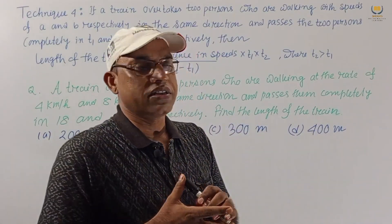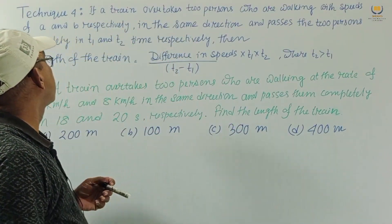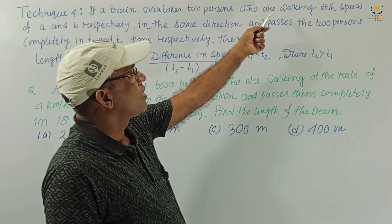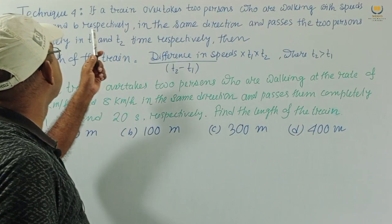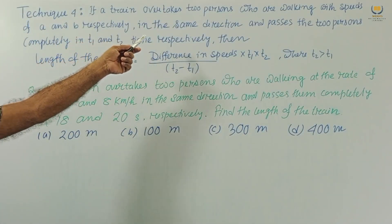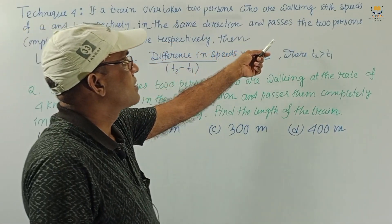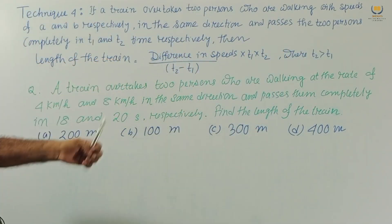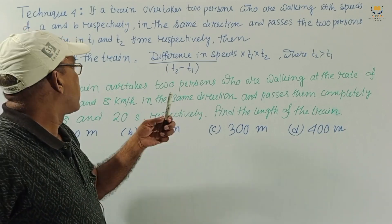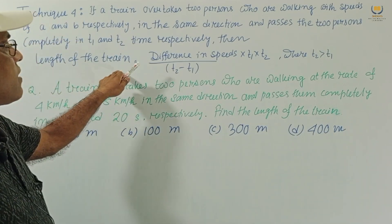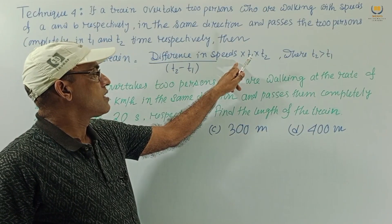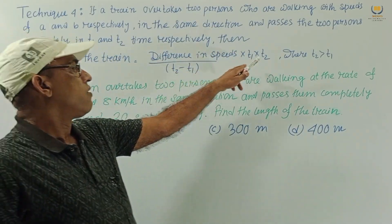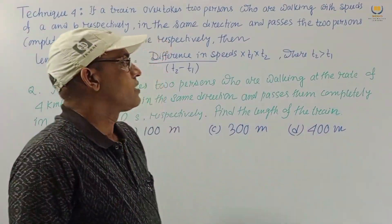Let us consider Technique 4: if a train overtakes two persons who are walking with speeds A and B respectively in the same direction, and passes the two persons completely in t1 and t2 time respectively, then the length of the train equals the difference in speeds multiplied by t1 and t2, divided by t2 minus t1, where t2 is greater than t1.